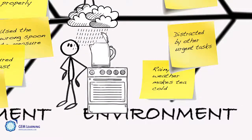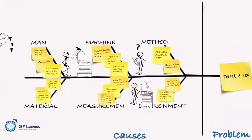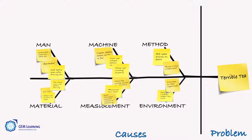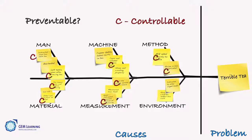Next, figure out ways to fix these causes. For each cause, ask whether you know how to prevent it. If yes, mark it with a C. That's controllable.